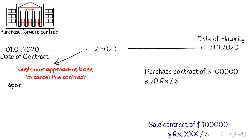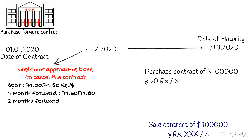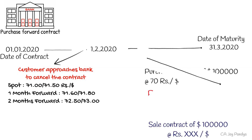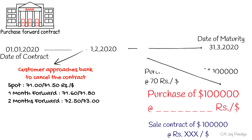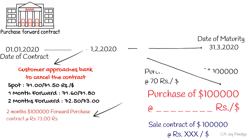On this date, the rates for the dollar were as follows — spot: 71 / 71.5; one month forward: 71.6 / 71.8; two months forward: 72.50 / 73. Since the contract will be cancelled, the bank will take the same position for the same date, that is a purchase of 1 lakh dollars at whatever rate is available. To get this position on 1st February 2020, the bank will enter into a two-month dollar 1 lakh forward purchase contract, as there are only two months remaining to maturity.